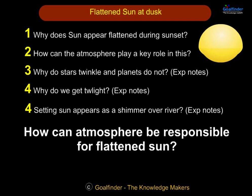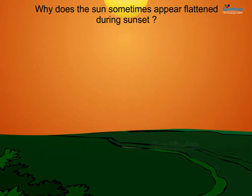Flattened Sun at Dusk: Why does the sun appear flattened during sunset? How can the atmosphere play a key role in this? Why do stars twinkle and planets do not? Why do we get twilight? The setting sun appears as a shimmer over a river. How can the atmosphere be responsible for the flattened sun?